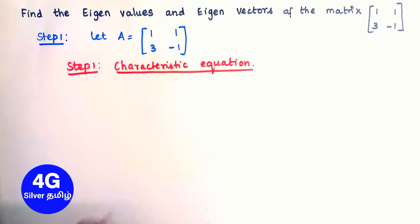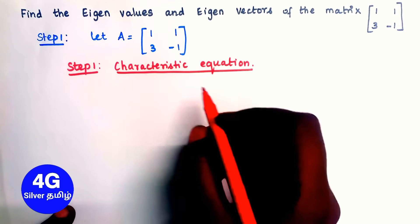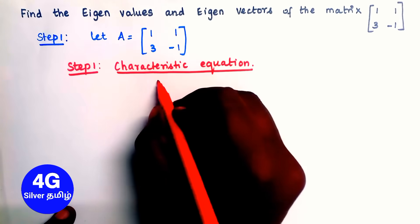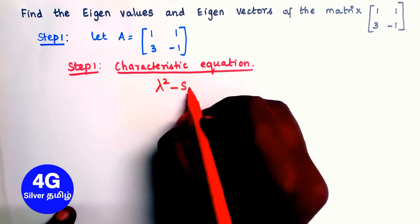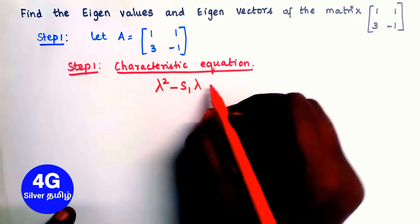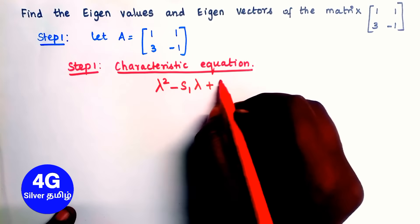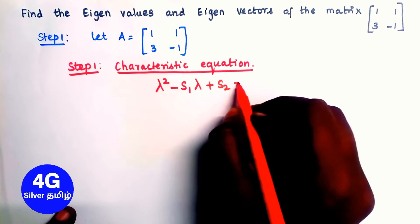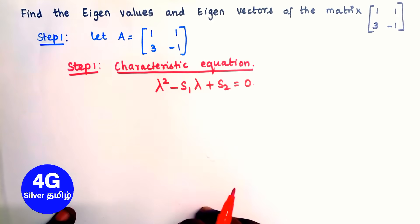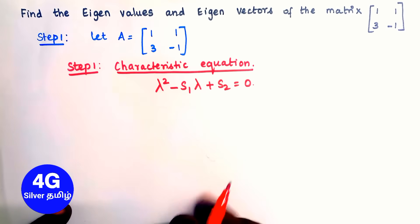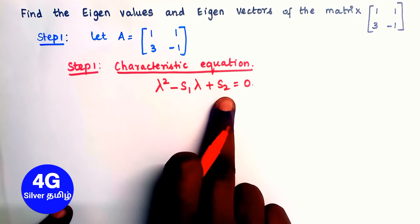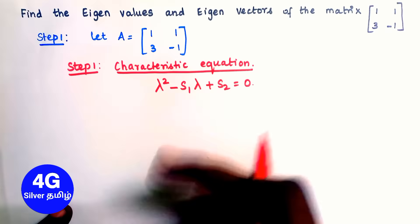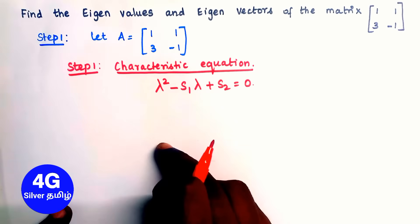This is a 2x2 matrix. The characteristic equation is: lambda squared minus S1 times lambda plus S2 equals 0. In this equation we need to find S1 and S2.